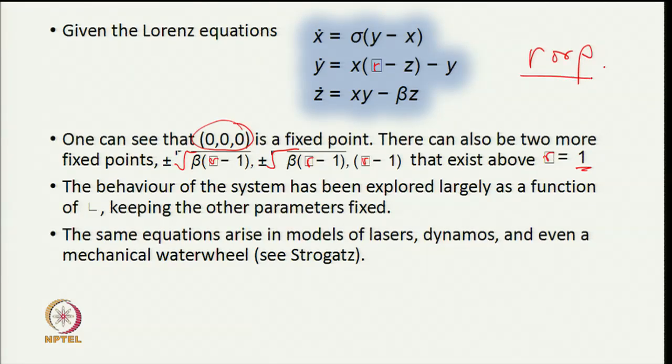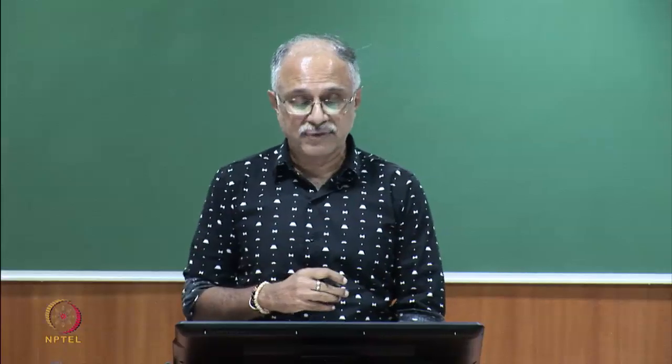r is the Reynolds number which in the flow would have been the Reynolds number. People have studied this system for a variety of different parameter values mostly as a function of r keeping other parameters fixed. There are canonical values where sigma = 10 and beta = 8/3 for reasons that Lorenz described in his very readable and brilliant paper that started this field of chaos.